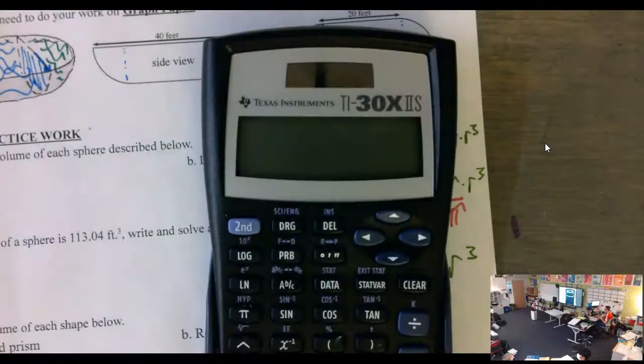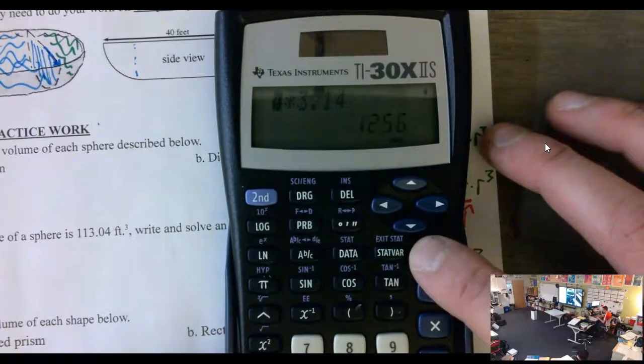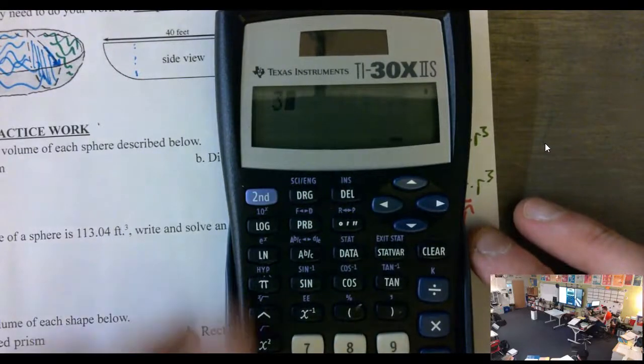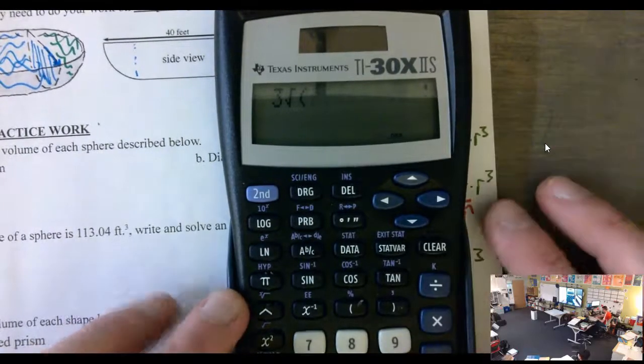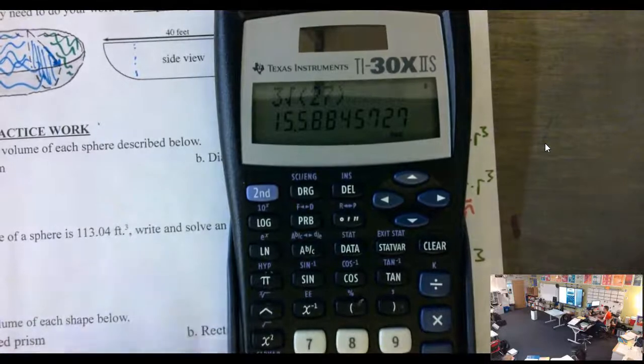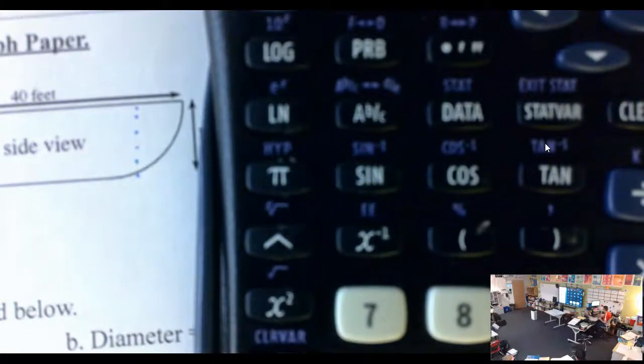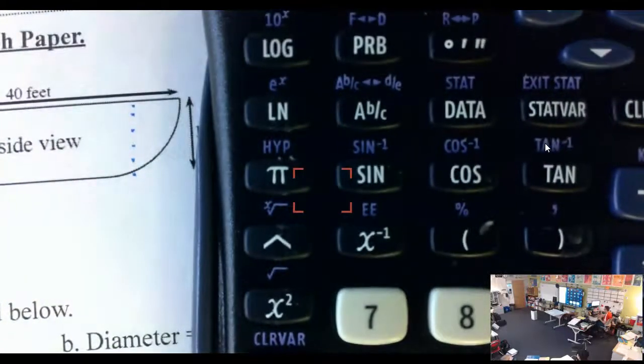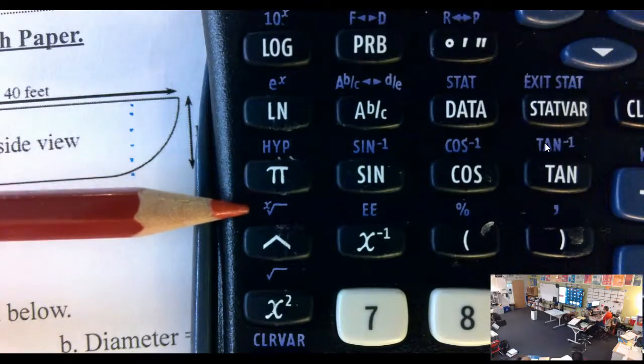And this is what I'm glad was pointed out to me this morning that some of us still don't know how to do in our calculator. The cube root is not three and then the square root button. That's three times the square root, the cube. So if I try to do that it's bad, it is not the right answer. Cube root is hitting three and then using the x root button, the second of the carrots if you have one of these calculators.